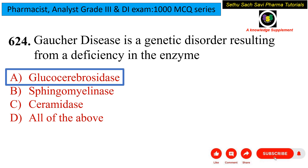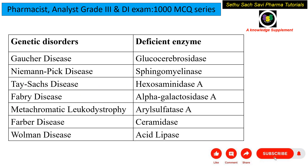This is a direct question — the answer is glucocerebrosidase. It is useful to also remember other genetic disorders and their corresponding deficient enzymes. In Gaucher's disease specifically, please note it is glucocerebrosidase.